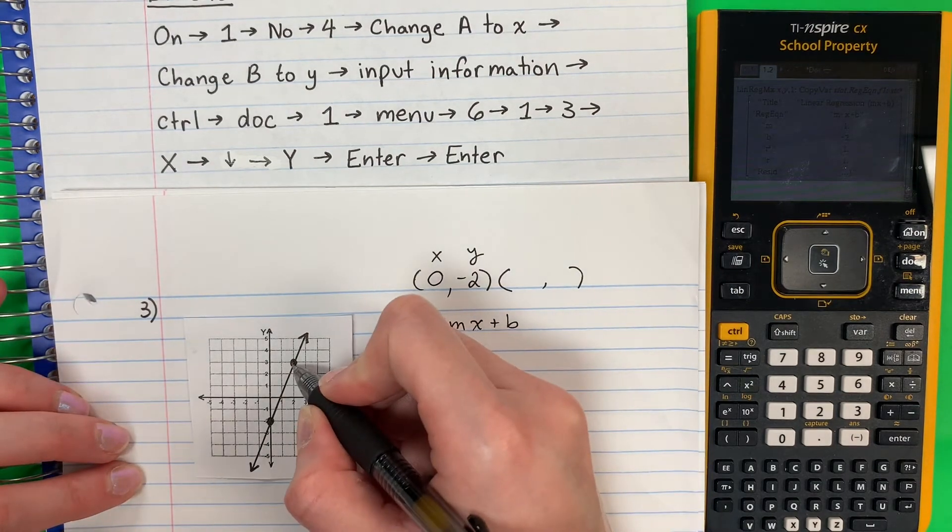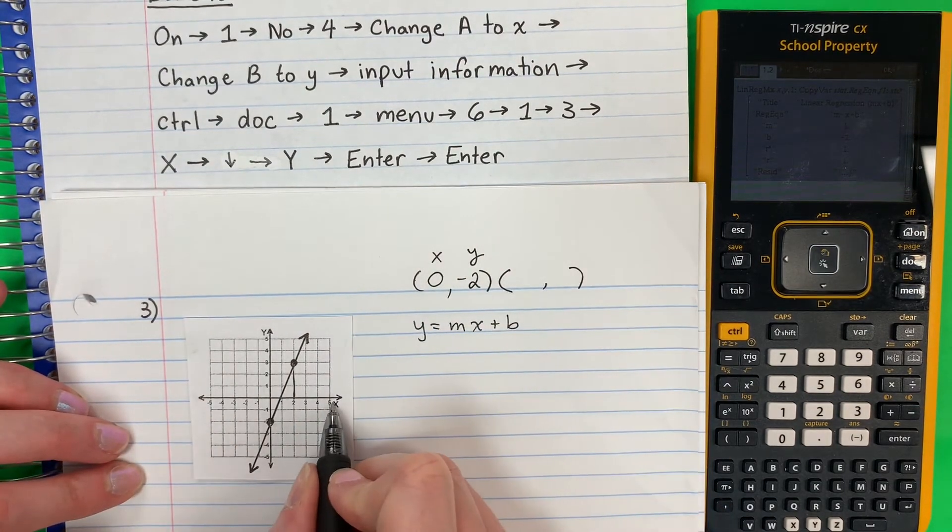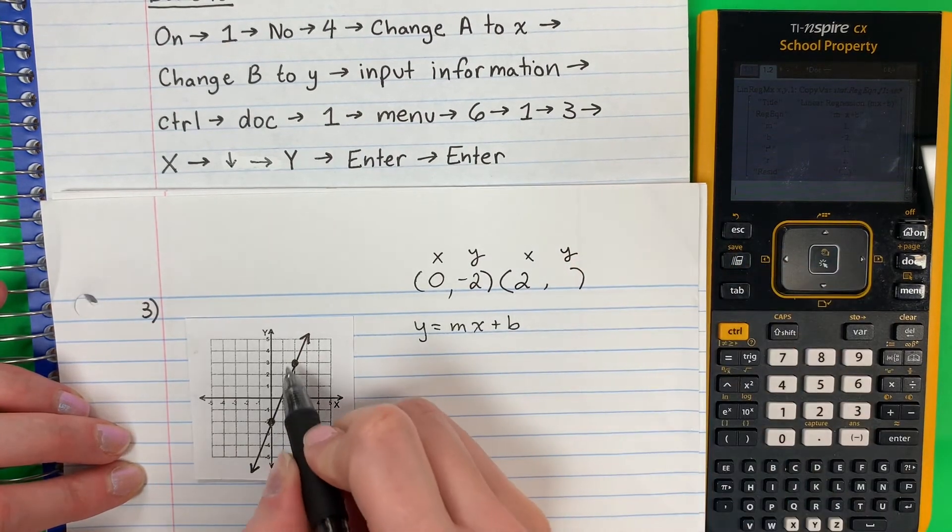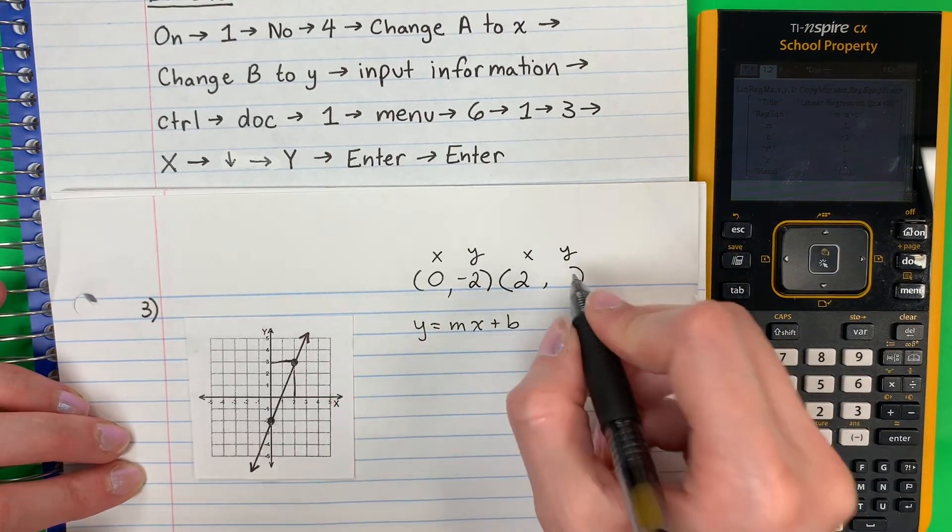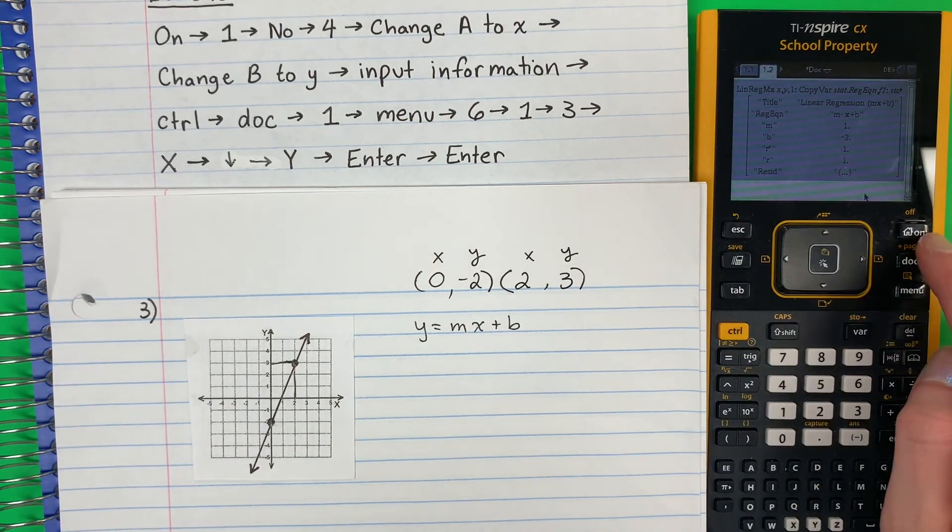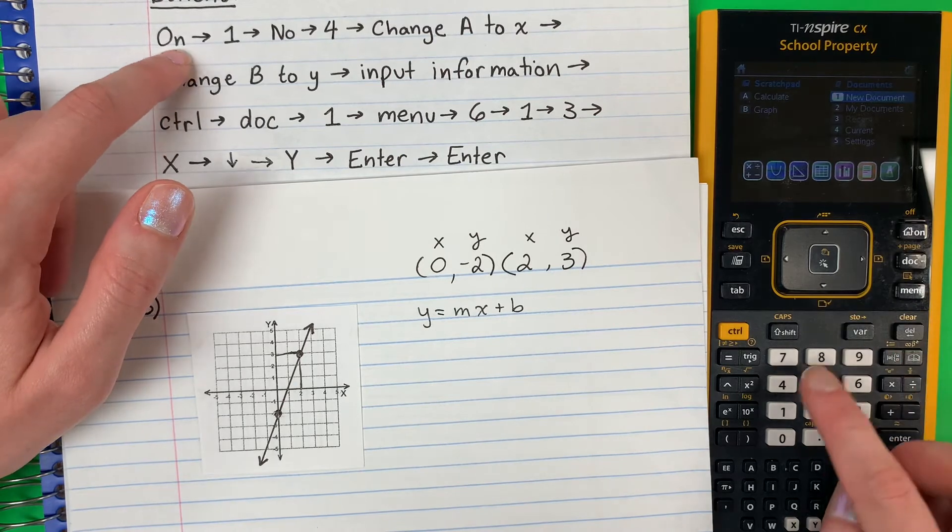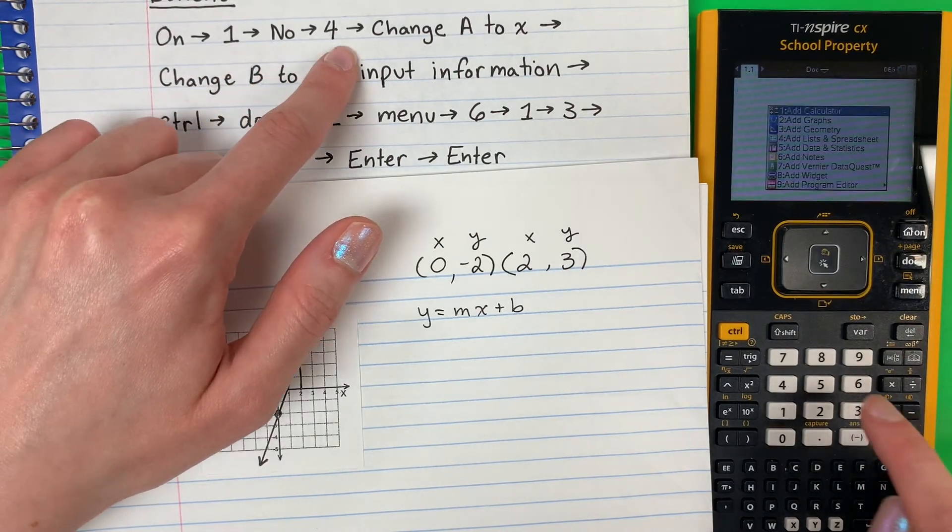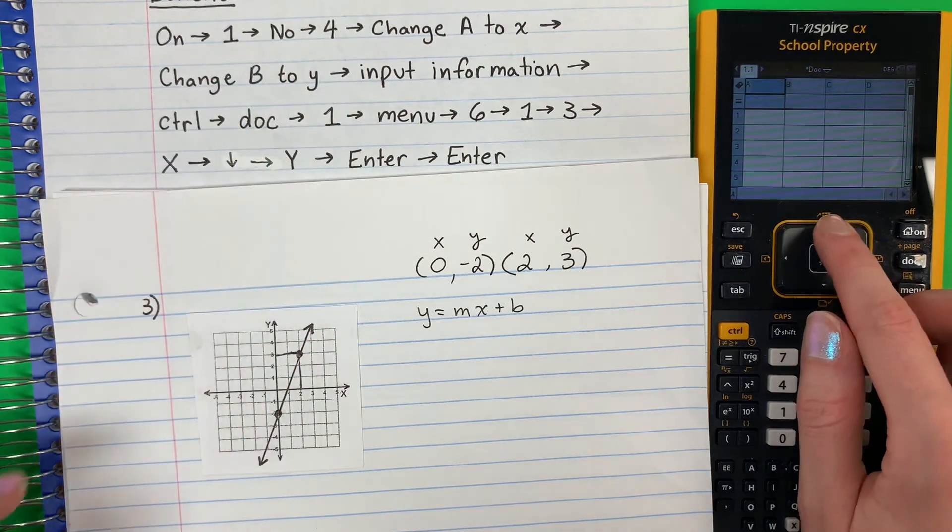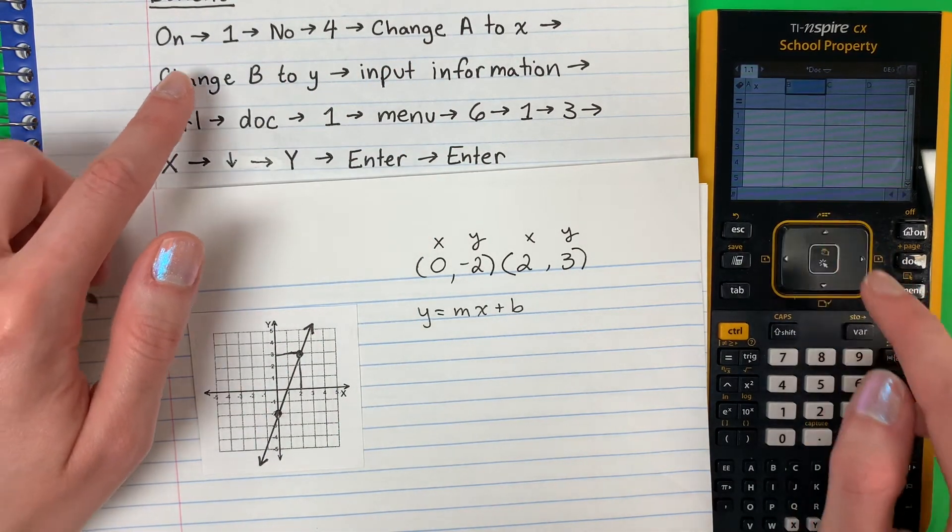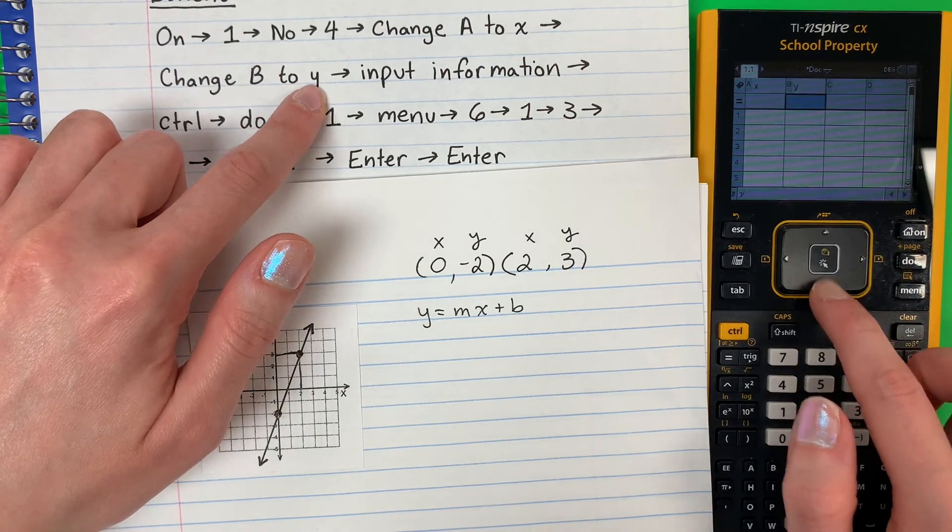And this number is touching X on the 2. X is 2. And touching Y on the 3. So it's 2, 3. So let's go ahead and do this. So push on. And then we're going to do 1, no, 4. Change A to X. Change B to Y. Go down. Here. Input your information.